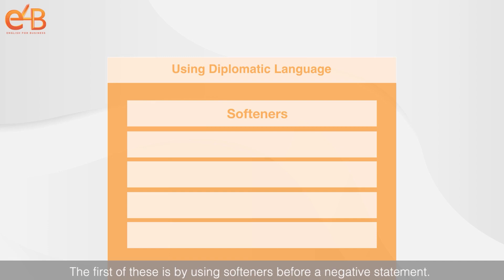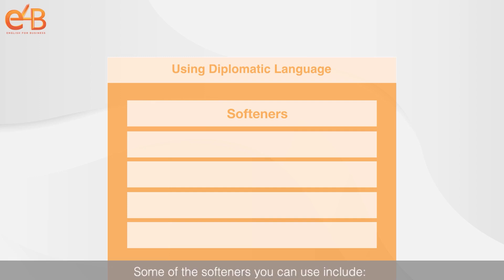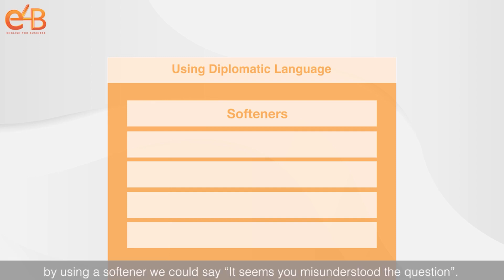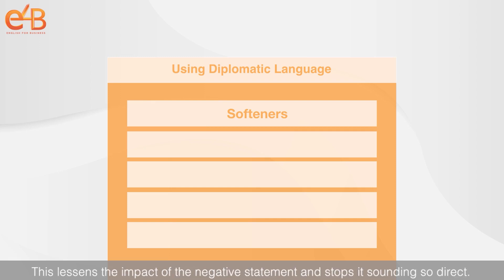The first way is by using softeners before a negative statement. Instead of simply saying something negative, you can use softeners to make it more diplomatic. Some softeners you can use include: I'm afraid, it appears, it seems. Rather than simply saying 'you misunderstood the question,' by using a softener we could say 'it seems you misunderstood the question.' This lessens the impact of the negative statement and stops it sounding so direct.